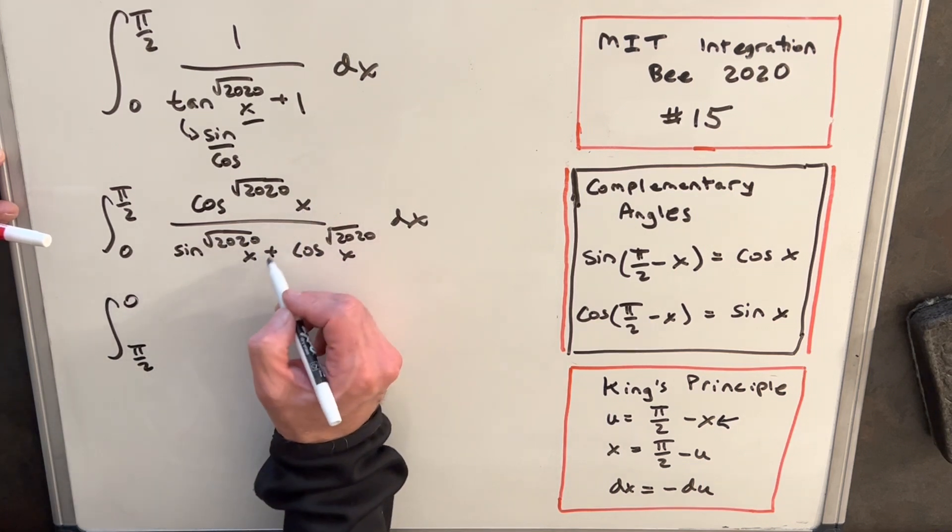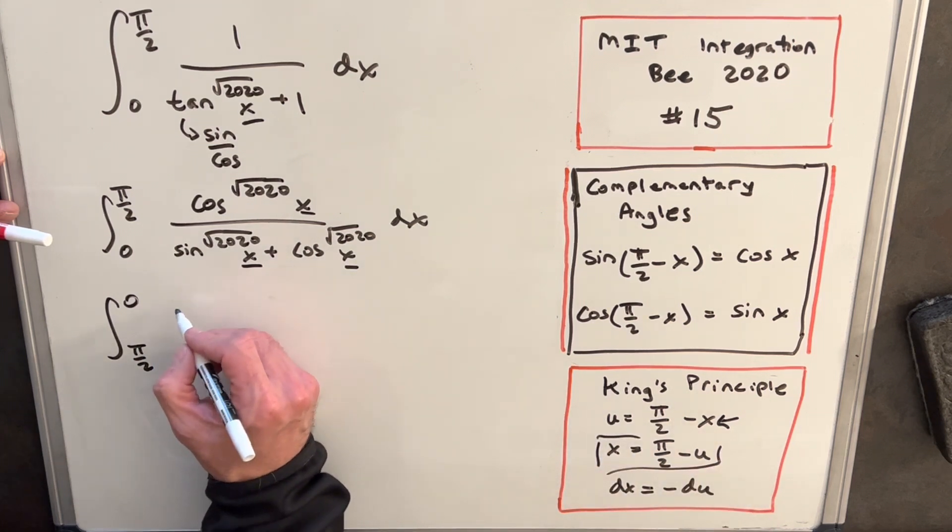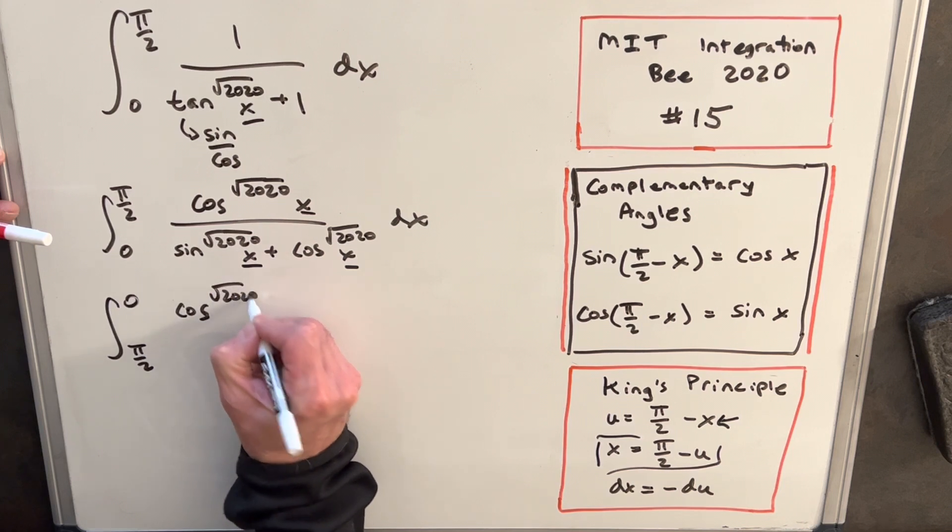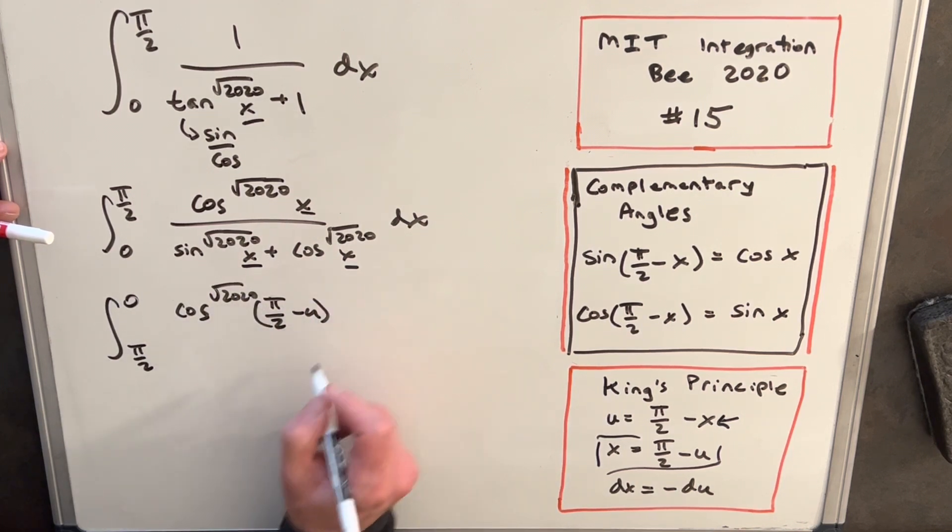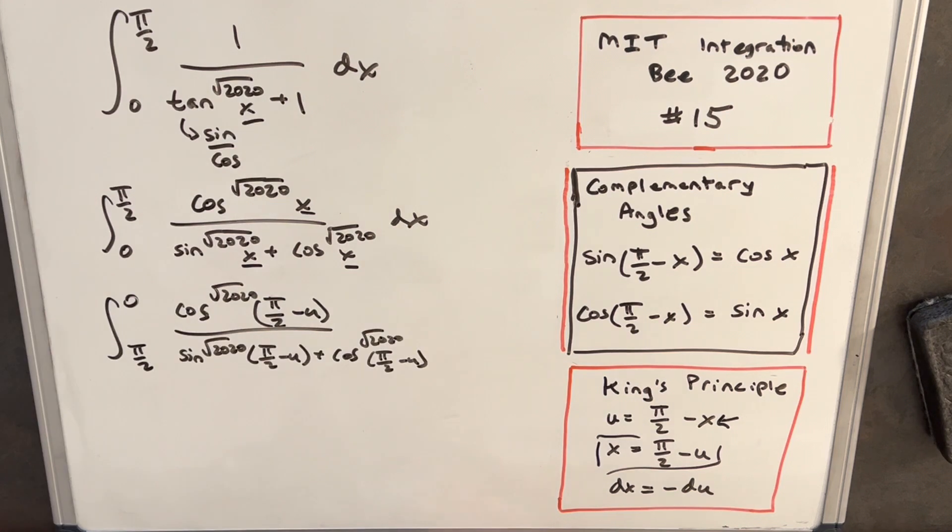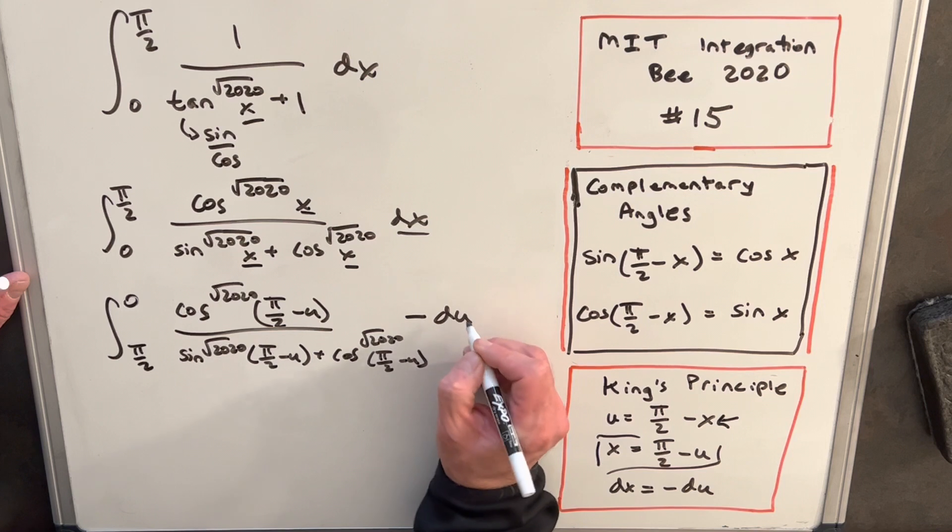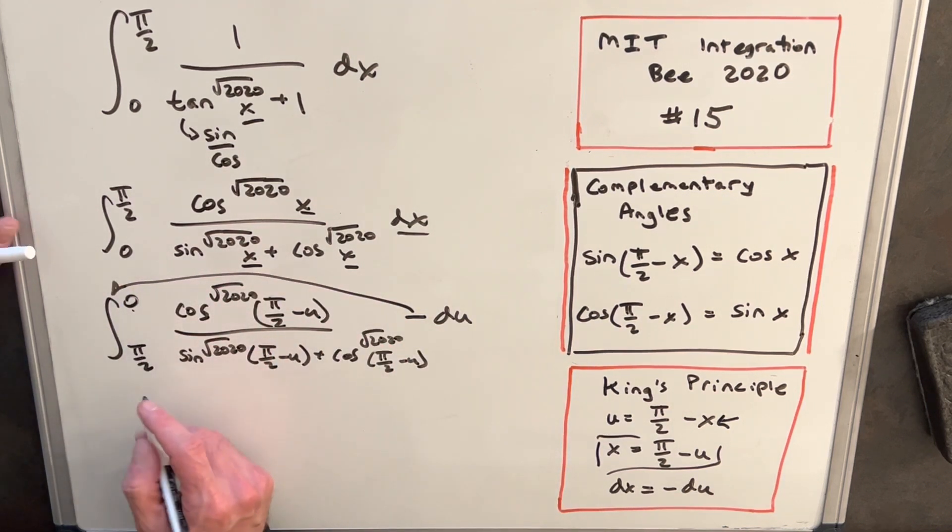Then, wherever we see an x we need to make a substitution with pi over 2 minus u. So we're going to have cosine square root of 20th, 20 pi over 2 minus u. We'll do the same for everything in the numerator, I'm sorry, in the denominator. And then for our dx, you'll notice this is going to be minus, we don't want to forget our minus du. And what we'll do is we'll use this minus sign to flip the bounds of integration back.